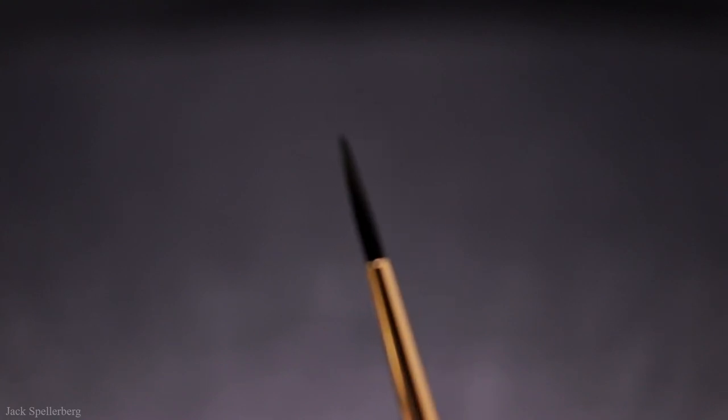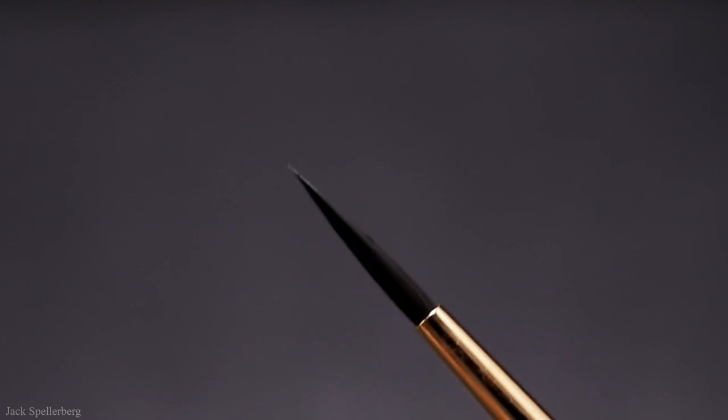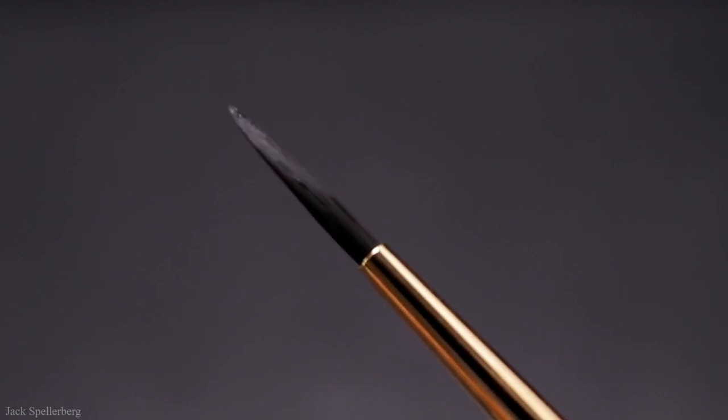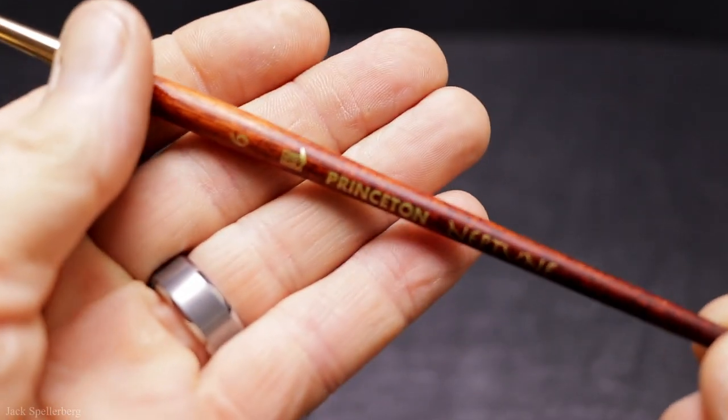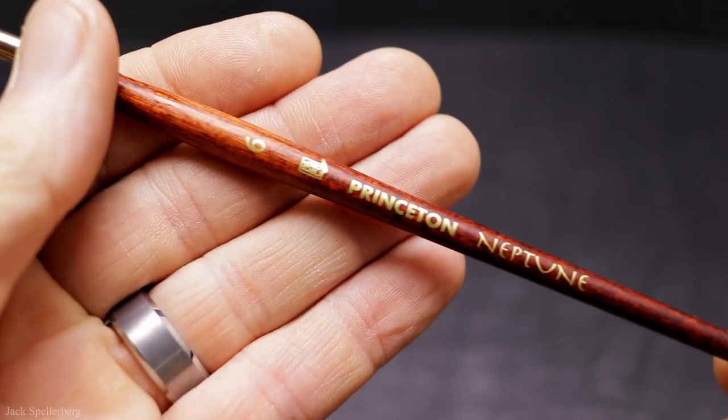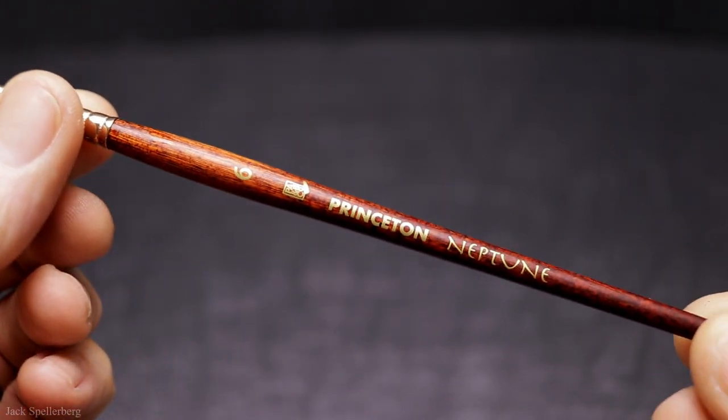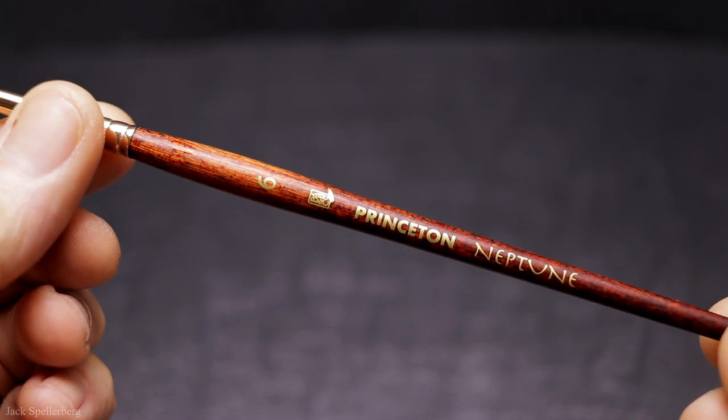I shaped the tip. It came to a really nice sharp point. And I laid it out kind of horizontally to dry. I had heard that you're not supposed to let them dry standing up. So I just laid it out flat and moved on to the next one, which is a Princeton Neptune number six.